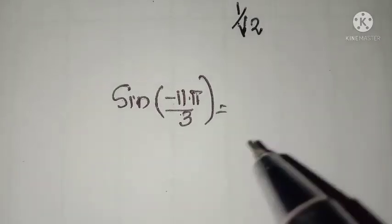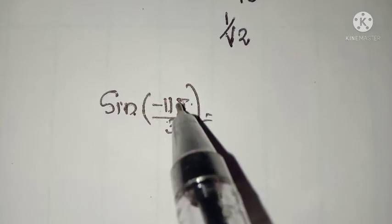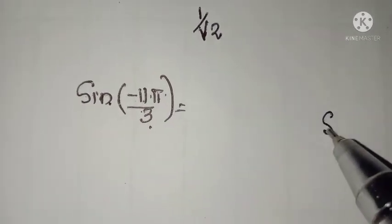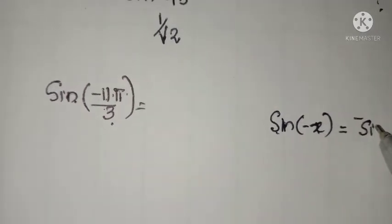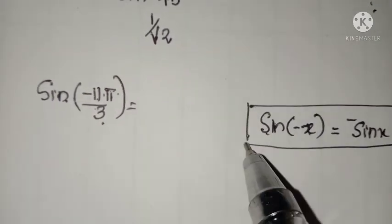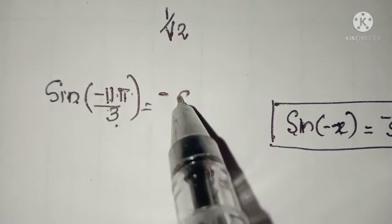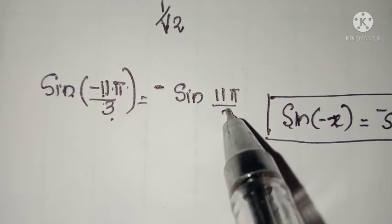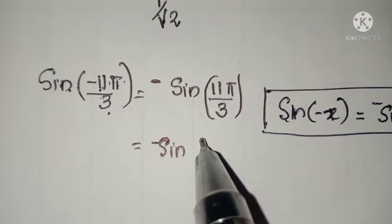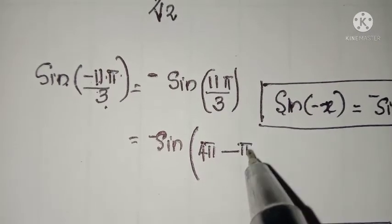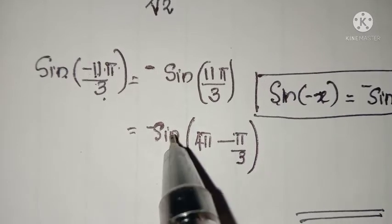Next question: sin(−11π/3). The given function is a sine function with a negative angle. The first result to use is: sin(−x) = −sin(x). Using this result, sin(−11π/3) can be written as −sin(11π/3). Now we need to simplify 11π/3. Since sine repeats after intervals of 2π, we convert 11π/3 in terms of 4π.